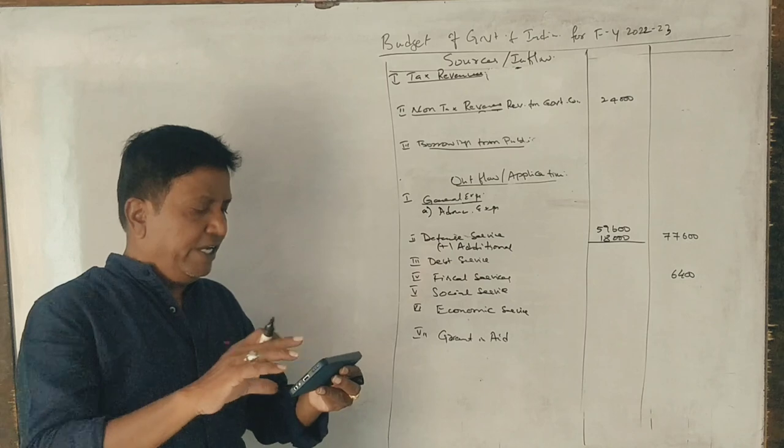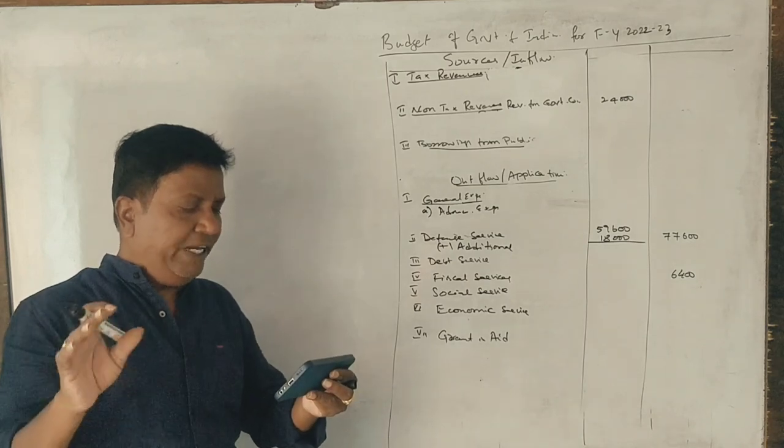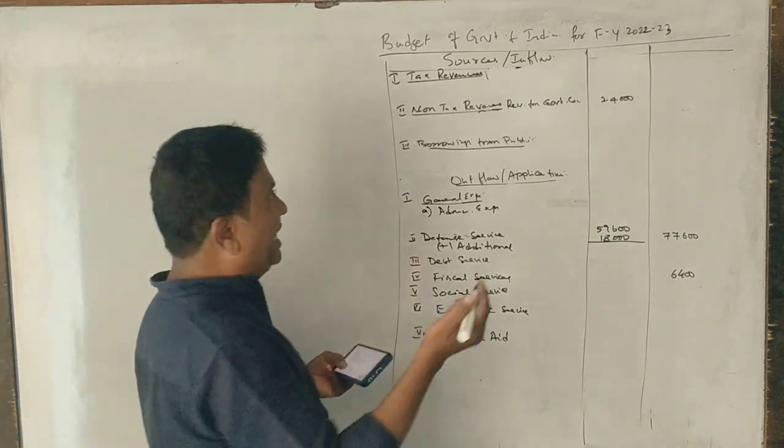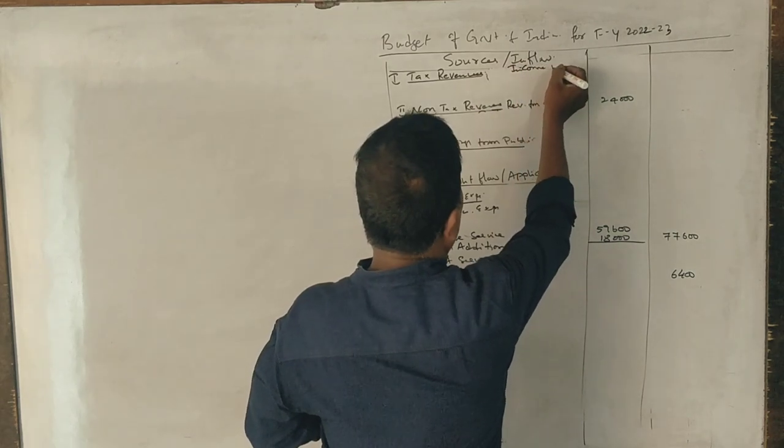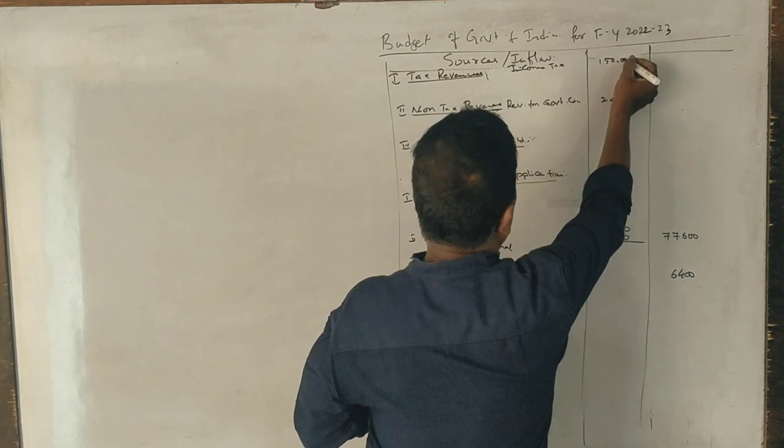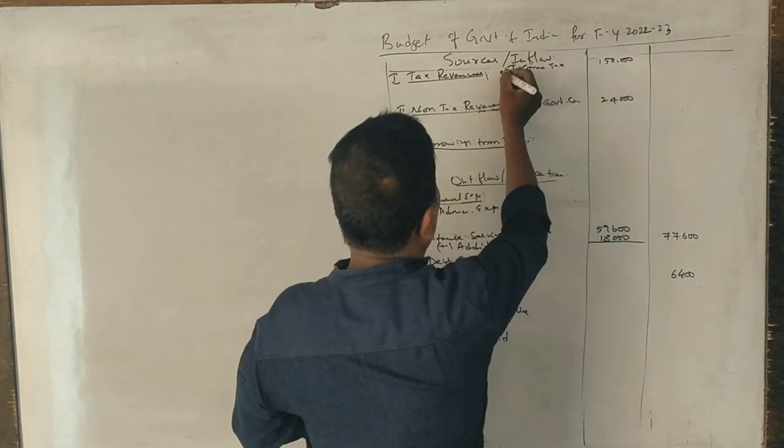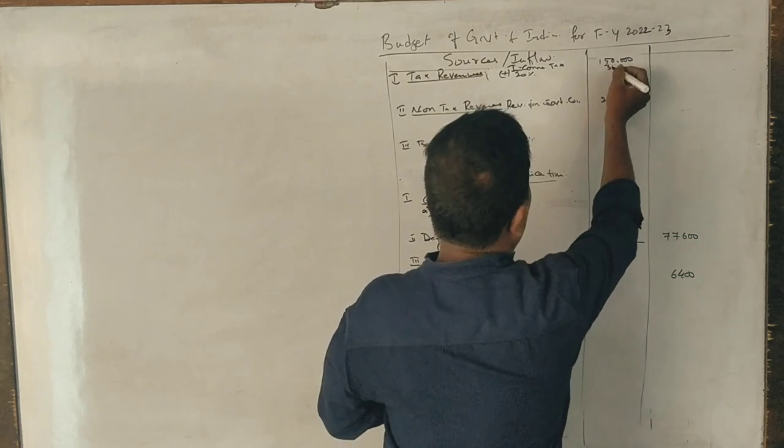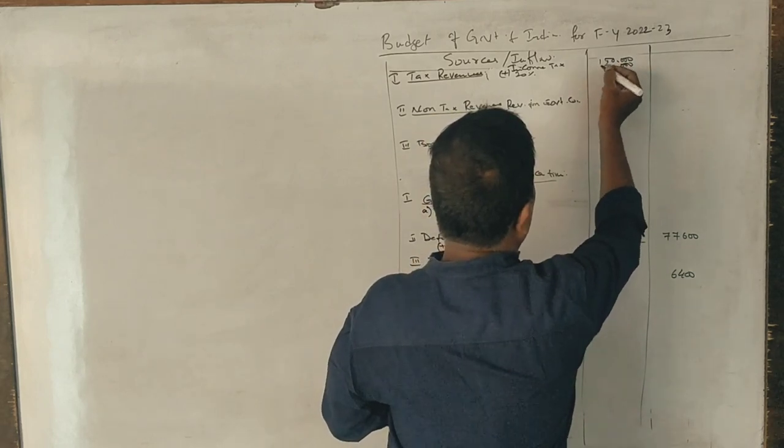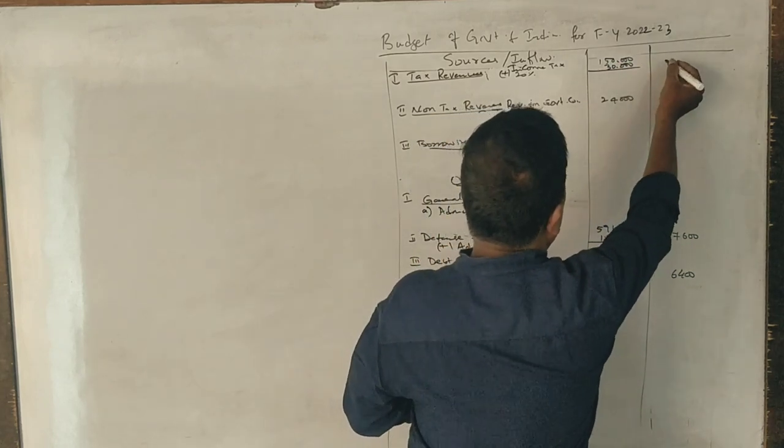Fourth adjustment: income tax is likely to go up by 20%. Income tax is 50,000. Twenty percent increase makes it 60,000.